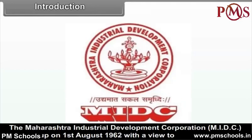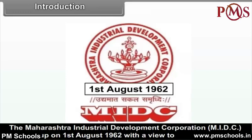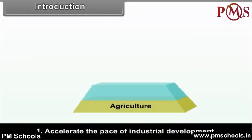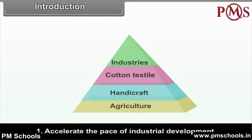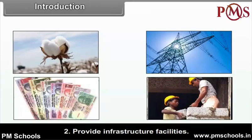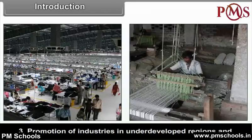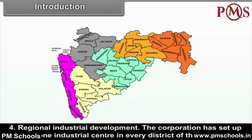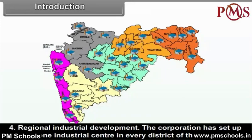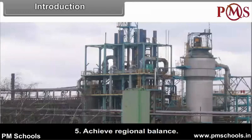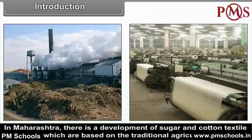The Maharashtra Industrial Development Corporation, MIDC, was set up on 1st August 1962 with a view to accelerate the pace of industrial development, provide infrastructural facilities, promotion of industries in underdeveloped regions and regional industrial development. The corporation has set up at least one industrial centre in every district of the state to achieve regional balance.